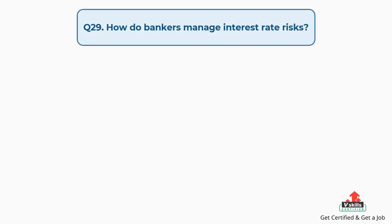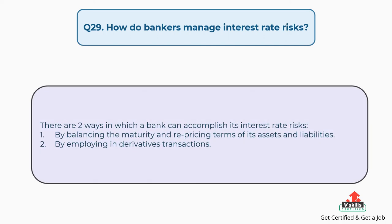Question number twenty-nine: how do bankers manage interest rate risks? There are two ways in which a bank can accomplish its interest rate risks: by balancing the maturity and repricing terms of its assets and liabilities, and by employing derivatives transactions.